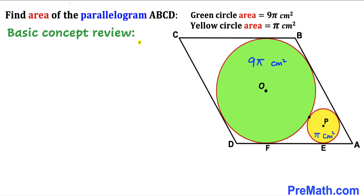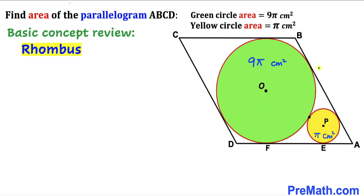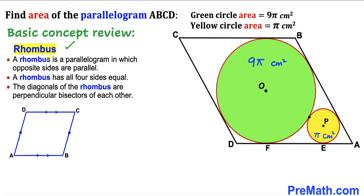Before we proceed, let's go over the basic concepts. Let's focus on parallelogram ABCD. We can see that the green circle is fully inscribed in it — all four sides are tangent to the green circle. We therefore conclude that ABCD is indeed a rhombus. A rhombus is a parallelogram where opposite sides are parallel and all four sides are equal.